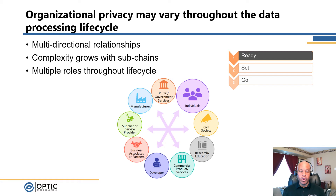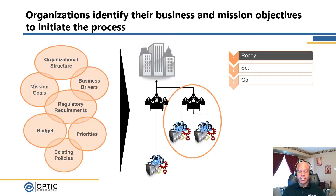Depending on where the organization sits and its relationship to its supply chain, there may be multiple profiles that will be developed, really just depending on the privacy values, risk tolerance, and even as a result of a risk assessment, which helps to solidify and begin to document the current state profiles, ultimately leading to the target profile. Organizations move forward with identifying the business and mission objectives to initiate the process of developing that current state profile, oriented around business drivers, regulatory requirements, and budget constraints.